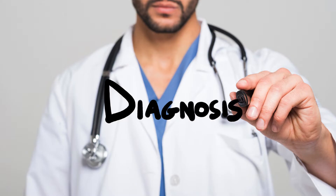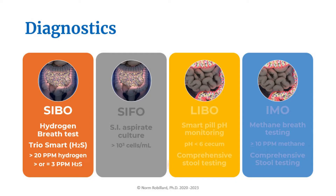Now let's talk about how to determine if you have one or more types of dysbiosis. SIBO is diagnosed using lactulose hydrogen breath testing. The definition of a positive test is greater than 20 parts per million of hydrogen over the baseline sample by 90 minutes. If taking the Triosmart test, greater than or equal to 3 parts per million of hydrogen sulfide at any point in the test is diagnostic for H2S or hydrogen sulfide SIBO.